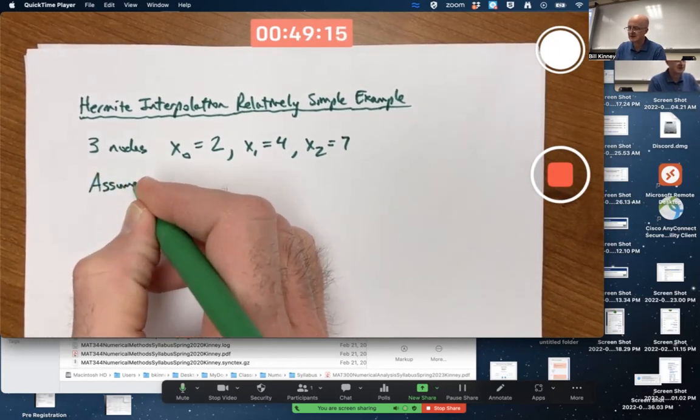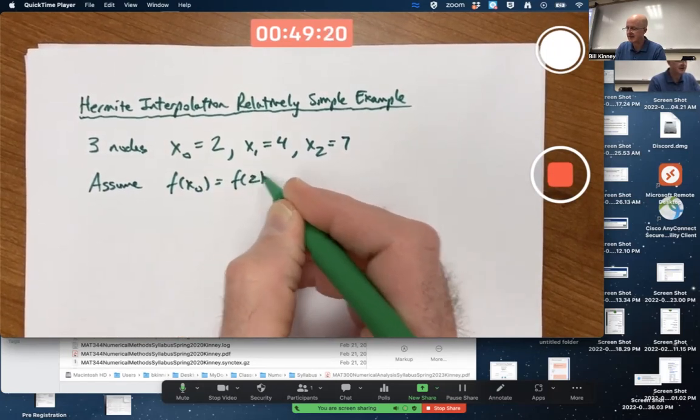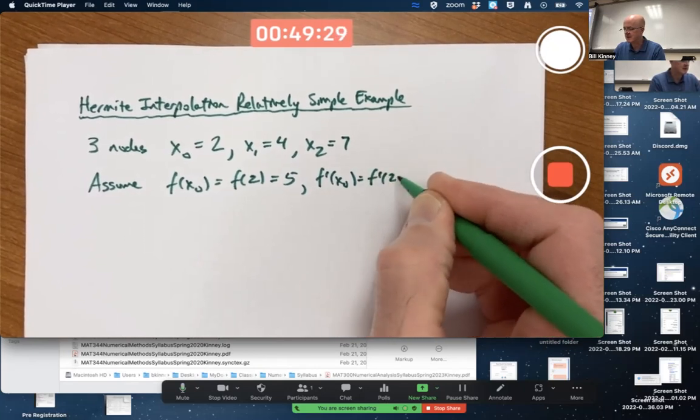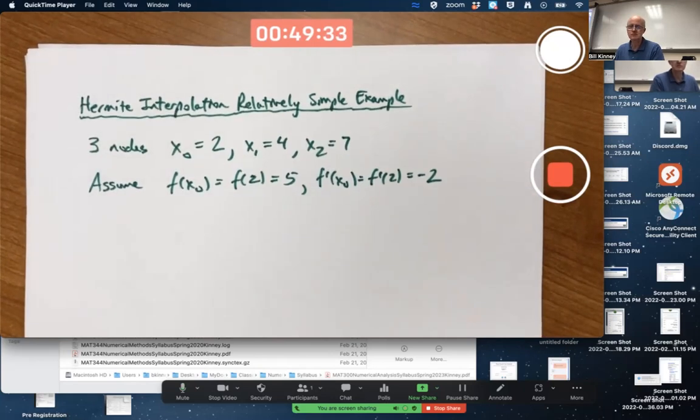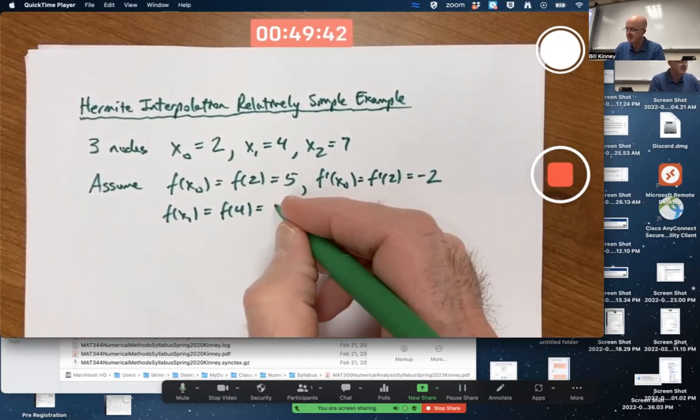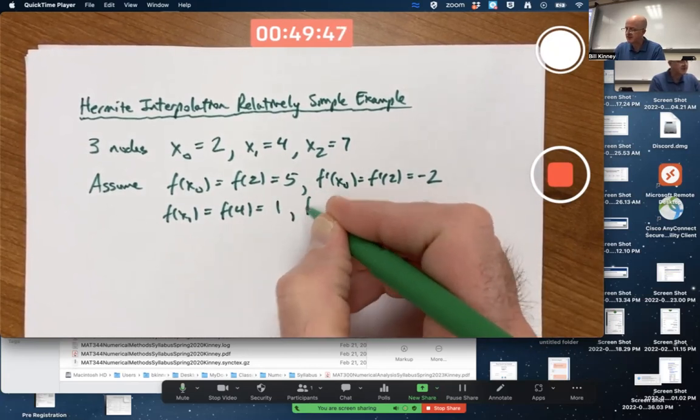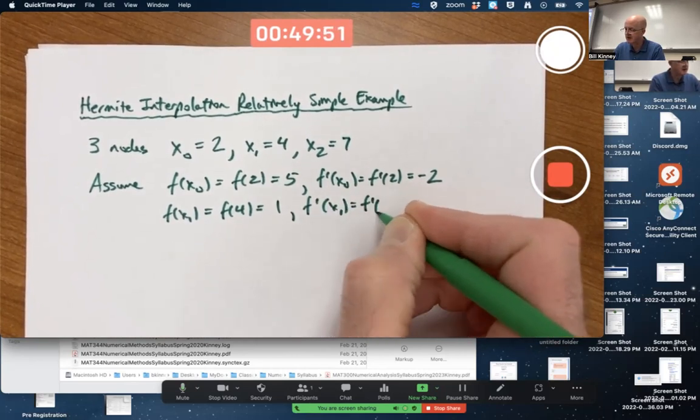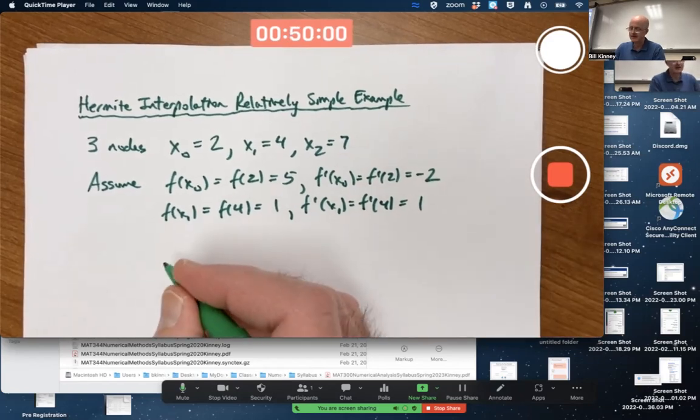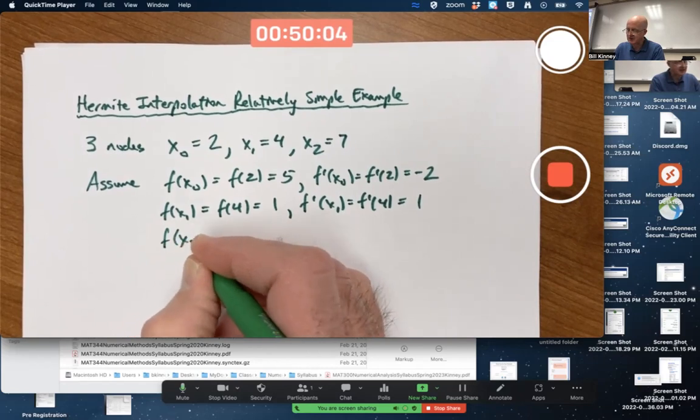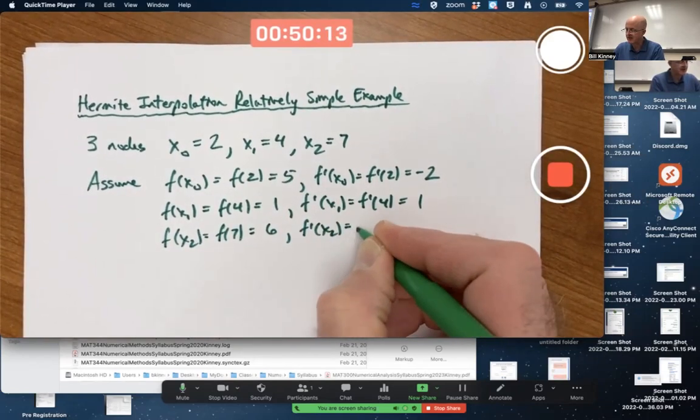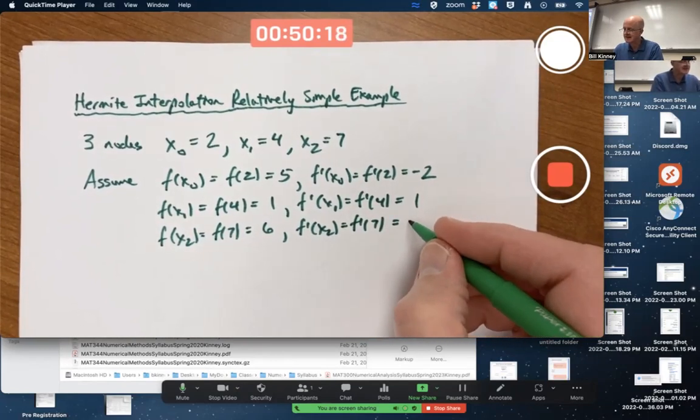Let's assume f of x0 is known. In other words, f of 2 is known, and let's pretend it's 5. The derivative of f at x0 is also known, and let's pretend it's negative 2. f of x1 is known, let's pretend it's 1. f prime of x1 is also known, let's pretend that's also 1. f of x2 is known, f of 7, let's pretend that is 6. f prime of x2 is also known, let's pretend that's negative 3.